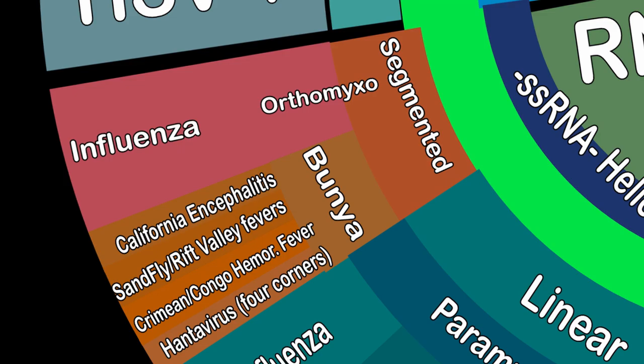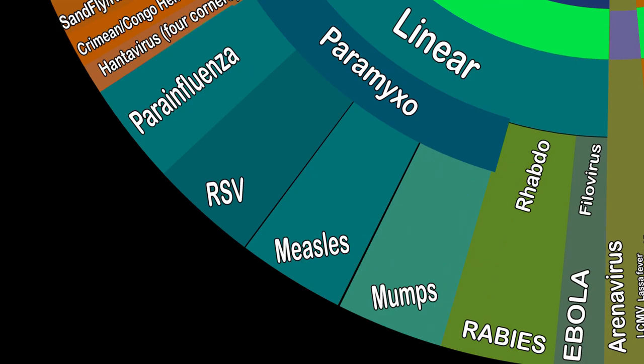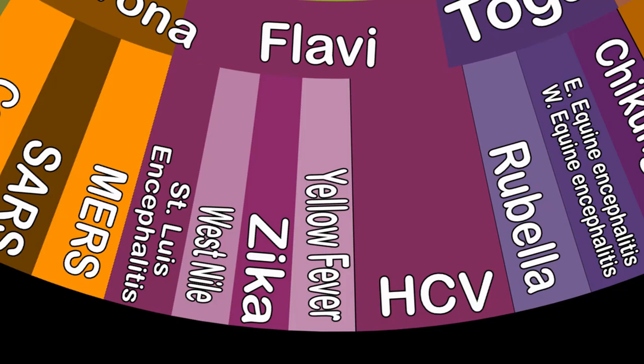Some RNA viruses have negative sense single-stranded RNA, some are positive sense, and hepatitis D over here is a weird one where it is just kind of broken. Segmented viruses like influenza can swap out genetic components, which can cause big shifts in how they infect humans. It's called reassortment. Some notable linear RNA viruses are in the paramyxo family.